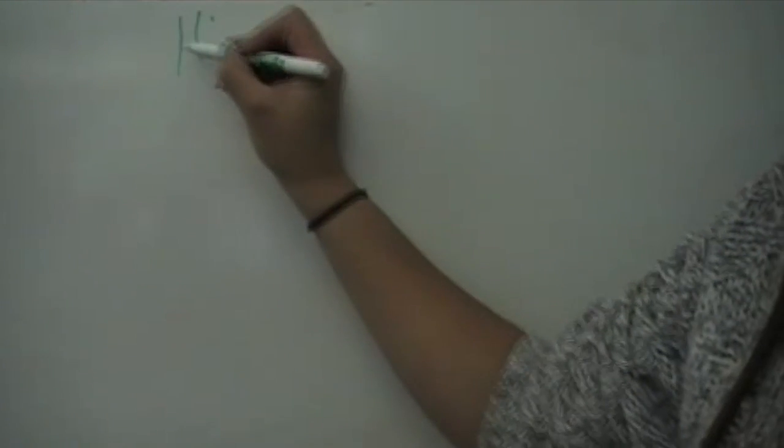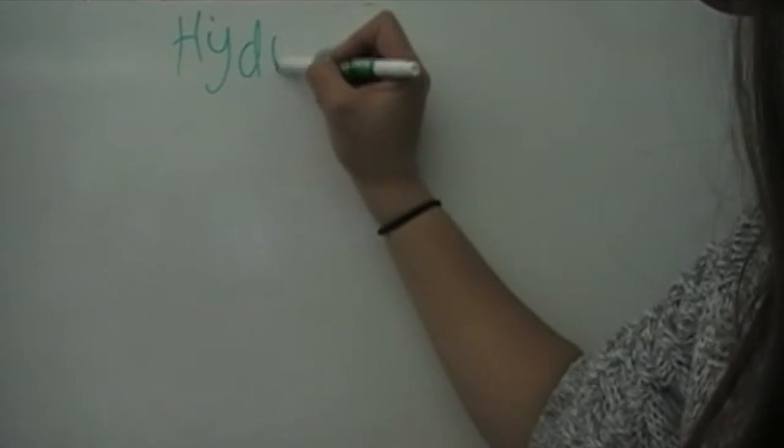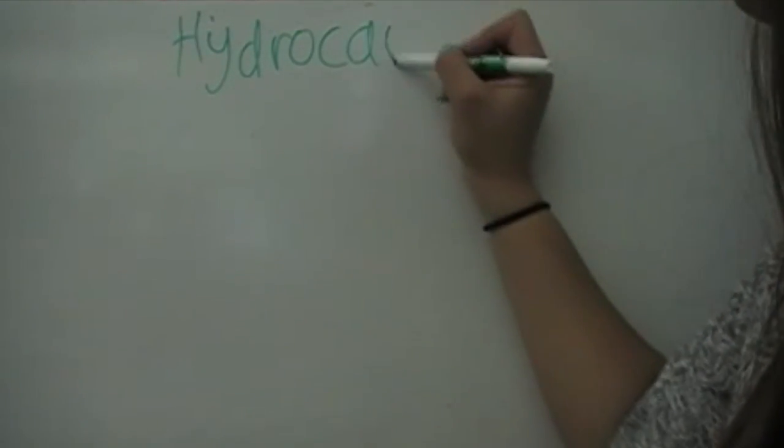A hydrocarbon is a compound consisting entirely of hydrogen and carbon. Hydrocarbons are a primary energy source for current civilization.